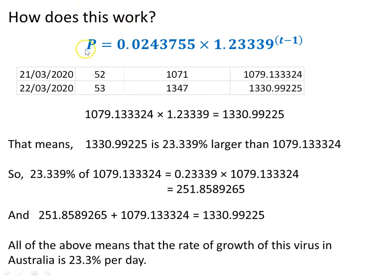So how does this model work? Let's pick two days in a row — yesterday and today, day 52 and day 53. The actual numbers are 1,071 and 1,347; here's what's predicted by the model. If you take the day 52 number and multiply it by the factor 1.23339, you produce the day 53 number. So day 53 is 1.23339 times day 52.